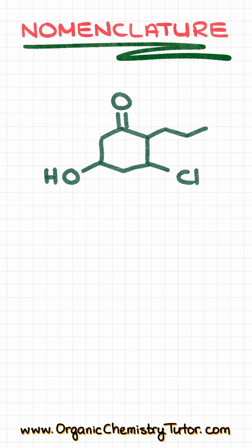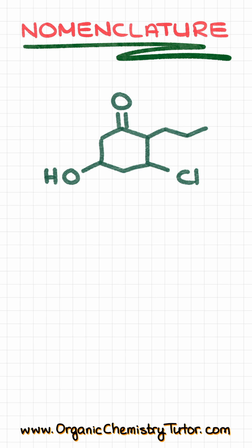How do we name this molecule? This is a cyclic molecule, and the very first thing we need to identify is which functional group is going to have the highest priority. In this case, we have a ketone and an alcohol as two functional groups. An important thing to remember is that the carbonyl has higher priority than the alcohol, which means our numbering has to start with our carbonyl.